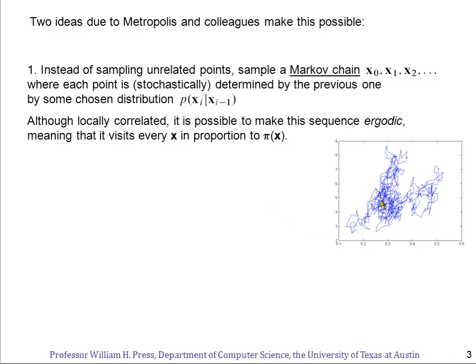Here's an example of such a chain of points. You can see that the individual XIs in the sequence are highly correlated. They move only a little bit around the space. But it's possible to make this sequence ergodic, and ergodic means that eventually, over time, this curve will fill in all possible values of X, exactly in proportion to the probability distribution that we're interested in, the unnormalized probability distribution pi of X.